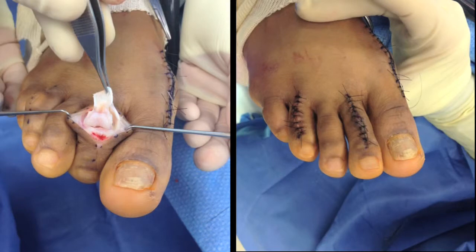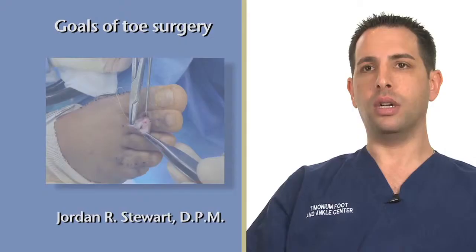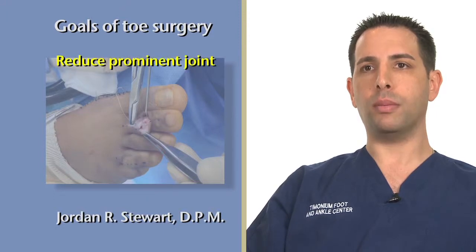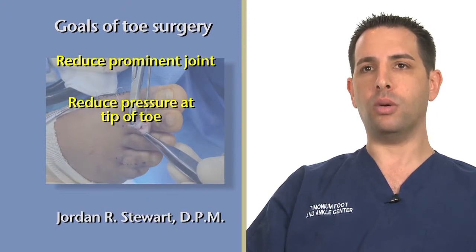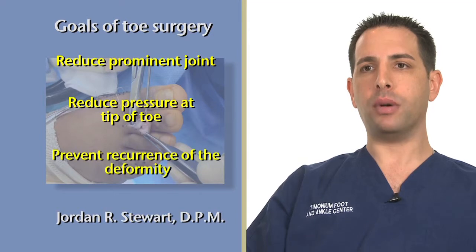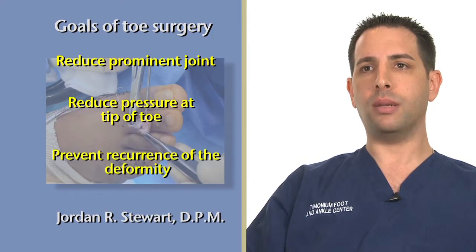If all conservative care fails, then surgical intervention is recommended. There are many surgical options for toe deformities, and if surgery is indicated, I will choose the right procedure for you. The goal of surgery is to reduce the prominent joint, take pressure off of the tip of the toe, and prevent recurrence of the deformity. The surgical recovery depends on the procedure performed.